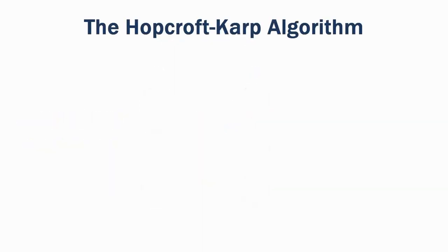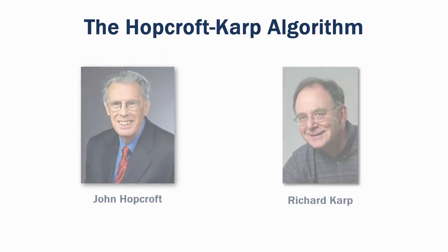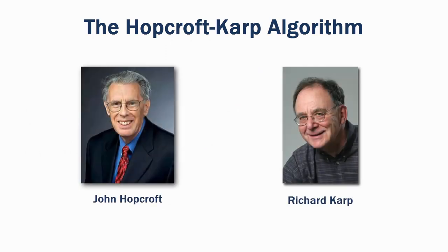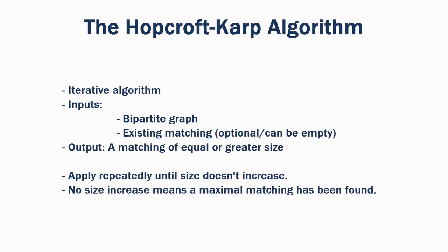The Hopcroft-Carp algorithm was published by John Hopcroft and Richard Karp in 1973. It is an iterative algorithm, which takes an existing bipartite graph and matching, and will increase the number of edges in the matching, unless it is already maximal. The algorithm can therefore be applied repeatedly until it fails to increase the size of the matching, and thus reaches a maximal matching.